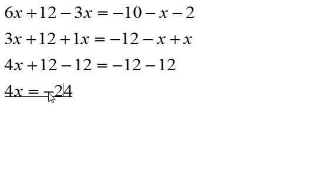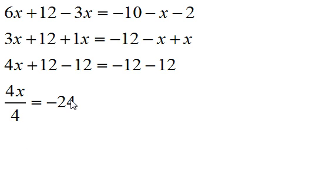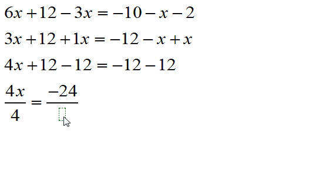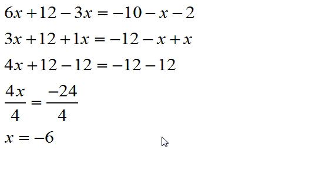The next step is to leave the variable x by itself, so I need to get rid of this 4. I'm going to undo multiplying by 4 by dividing by 4 on both sides of the equation. When you divide here, the 4s cancel out, leaving you with x. And when you divide negative 24 by 4, you get negative 6. And this is how you solve this equation.